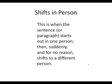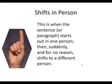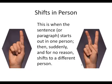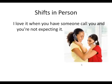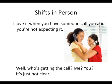This often happens when the sentence, or even a paragraph, starts out in one person — like first person: I, me — and then suddenly shifts for no reason whatsoever to a different person: you, your, yours. Here's an example: 'I love it when you have someone call you and you're not even expecting it.' Well, who's getting the call? Me? You? It's just not clear.